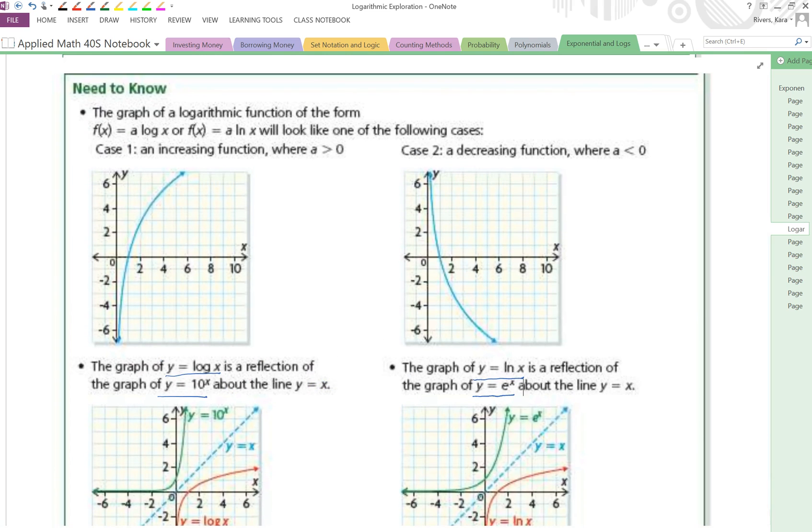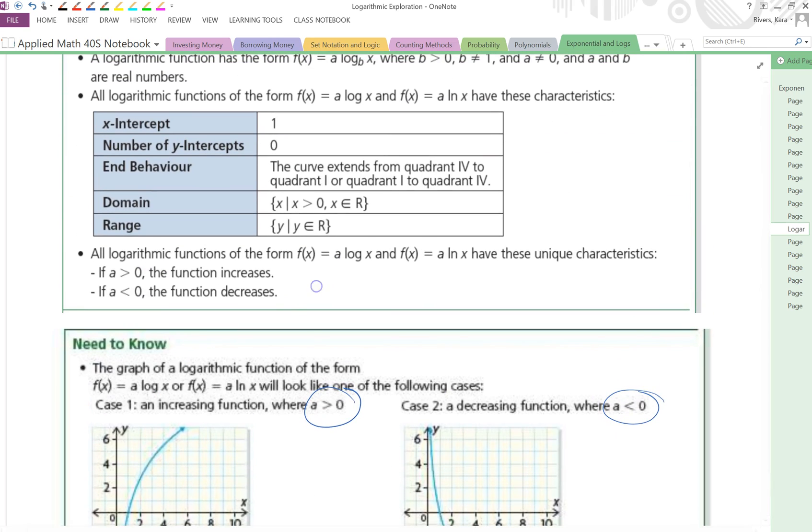We look up here. Our increasing functions are when A is greater than 0, decreasing when A is less than 0. And these are our common characteristics that we're used to. We want to rewrite these as 0 to infinity and negative infinity to infinity and do that if that makes more sense to you.